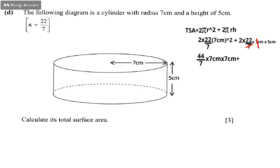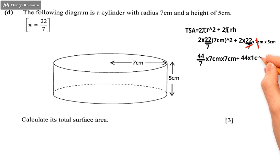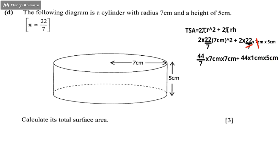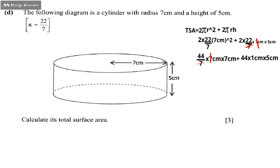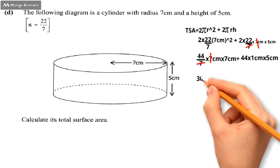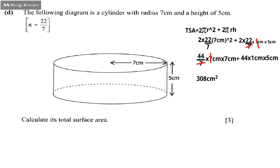So we multiply 44 times 7, which gives us 308 centimeters squared. On the right side, similarly the 7s cancel each other out, leaving us with 44 times 7. So 44 times 7 equals 308 centimeters squared.